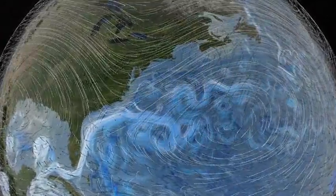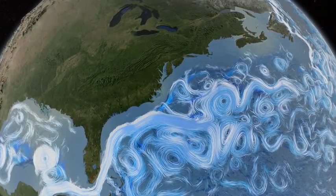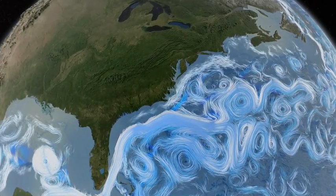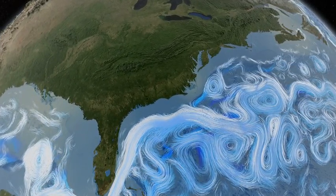Wind currents drive surface ocean currents. This computer simulation shows the Gulf Stream winding its way along the coast of North America.